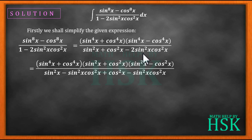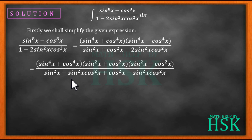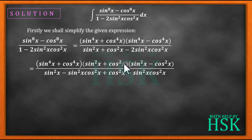We break the 2sin²x cos²x term in the denominator into sin²x·cos²x + sin²x·cos²x. One part is grouped with sin²x terms and the other with cos²x terms. Since sin²x + cos²x = 1, that factor equals one.